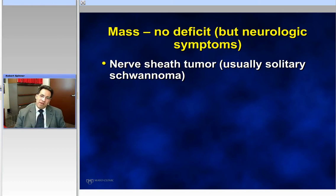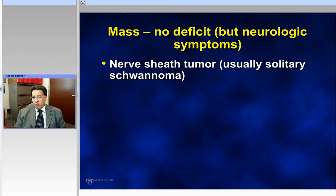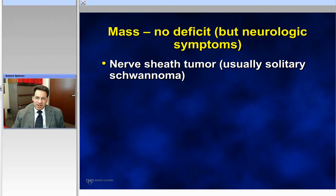So if you have a patient with symptoms but a normal exam, and you image them and the radiologist says it's a nerve sheath tumor, then you're down to schwannoma or neurofibroma. Think about syndromes. If there's no syndrome and it's solitary, it's usually a schwannoma, and that patient has a very good outcome with surgery if necessary.